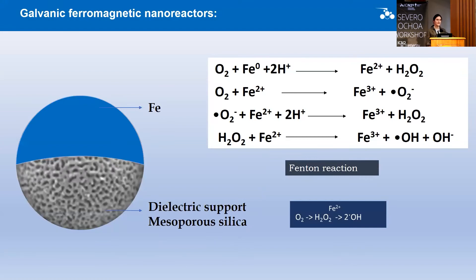Apart from iron-gold nanoreactors, we also have iron-only nanoreactors, which have only the iron layer on the dielectric support. The working principle of these nanoreactors is based on the Fenton reaction. In the system, various redox reactions take place with the help of oxygen and hydrogen peroxide — zero valent iron reacts with oxygen and catalyzes hydrogen peroxide formation to generate reactive oxygen species.